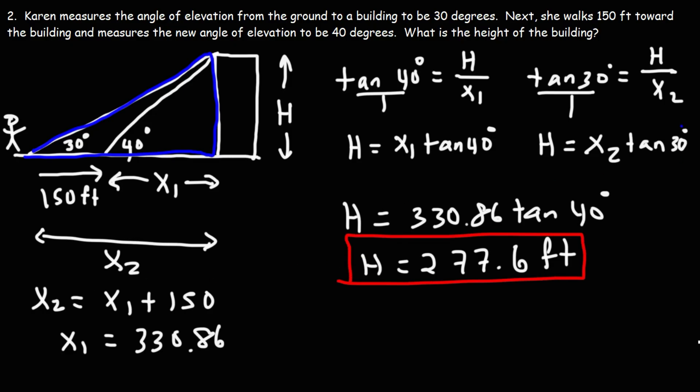Now of course you can also use this formula to get the answer, but you need to get x2. So x2 is 150 more than x1. So x2 is 330 plus 150, that's 480.86, and then times tangent of 30. And you'll get the same answer, 277.6.